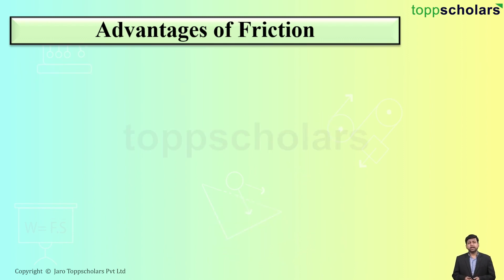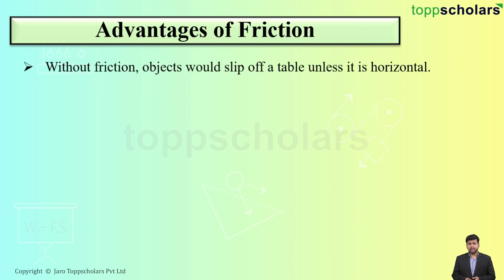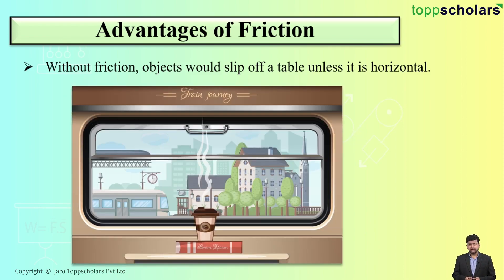Another advantage of friction is that without friction, objects would slip off the table unless it's horizontal. For example, imagine there is a cup of coffee kept on a horizontal table. If you observe, it is not slipping, because in a horizontal condition, even with very less friction, objects won't slip.